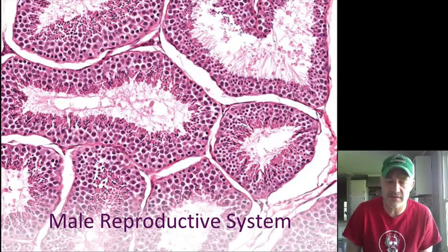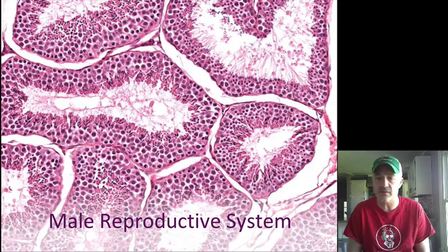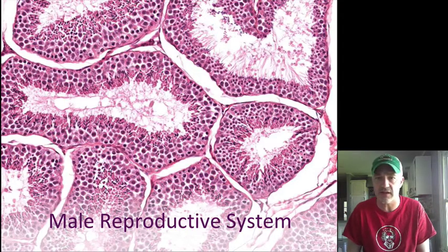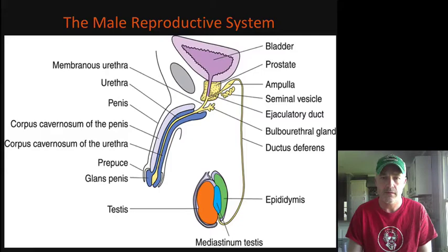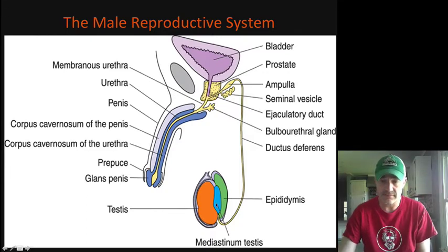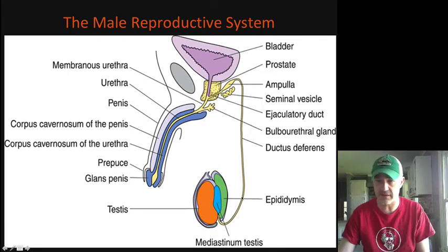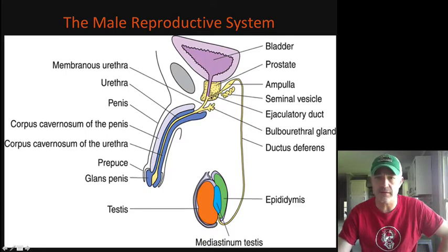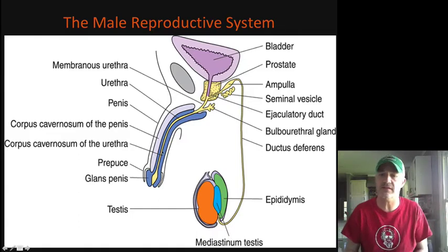We're here to talk about the male reproductive system, mainly focusing on the testes and the seminiferous tubules and the development of spermatozoa in this first session. Then we'll look at the rest of the male accessory reproductive glands in the next one. This first part covers the testes, and you can see there is a tube that goes up to the rest of the reproductive system. We'll also look at the seminal vesicles, the prostate gland, the bulbourethral glands, and the erectile bodies of the penis in terms of the histology of this system.